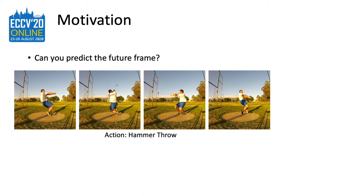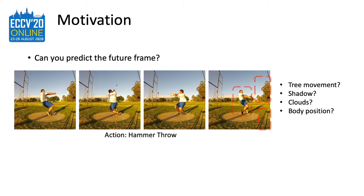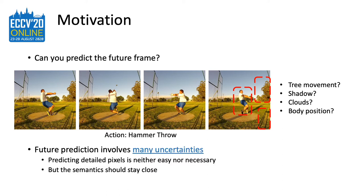Let's see an example. Imagine I present you the following frames, which is the beginning of a video with a hammer throwing action. Can you predict the future frame? Sure, you may be able to predict the rough scene, like the human still stands on the field with some trees in the background. But how about the details? The trees might have tiny movement, the cloud might move a few pixels due to wind, and the shadow might change a little because it's approaching sunset. If the model is asked to predict the future frame, all of these details matter. We can see the future prediction involves so many uncertainties.